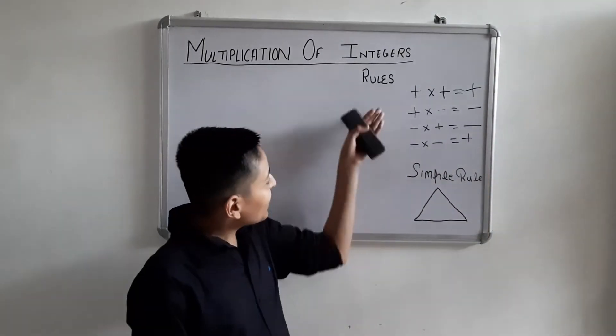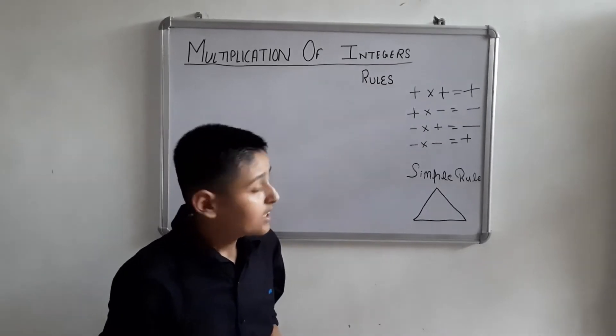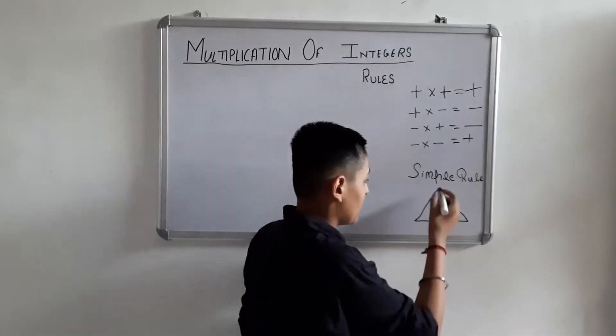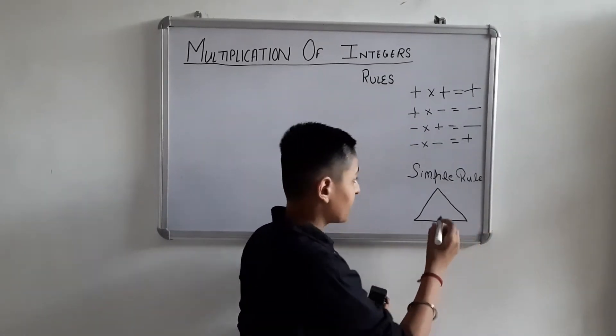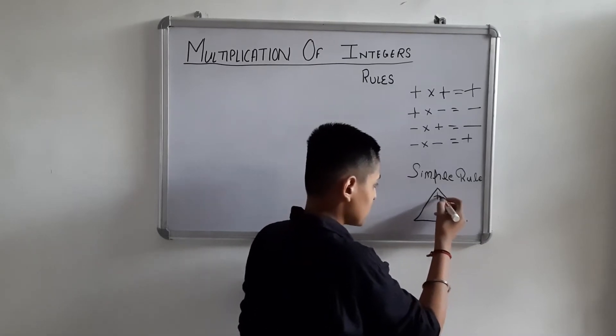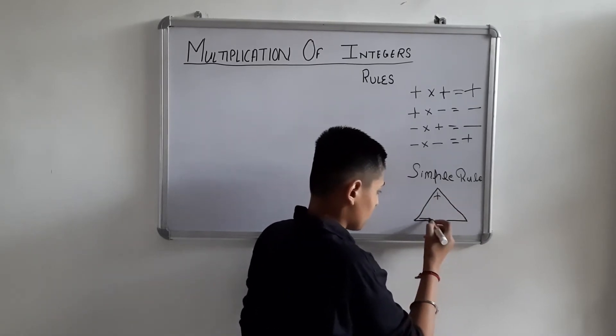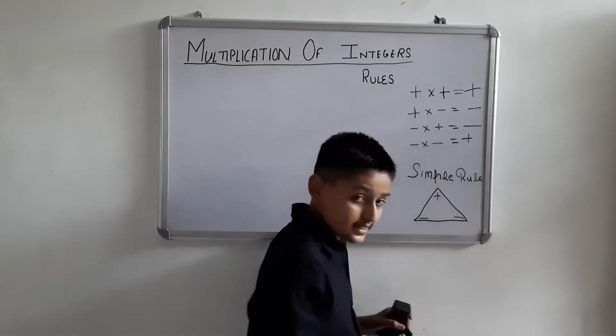If we forget these rules, here's a simple rule: Make a triangle first, then put a sign of plus on top and minus sign on bottom.